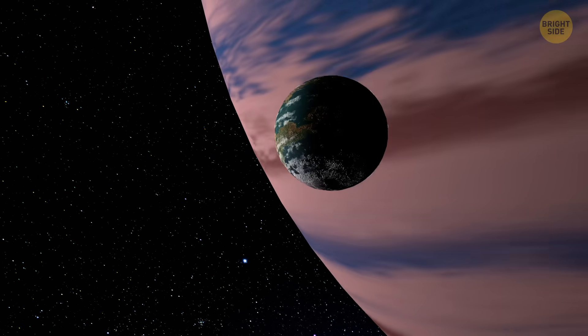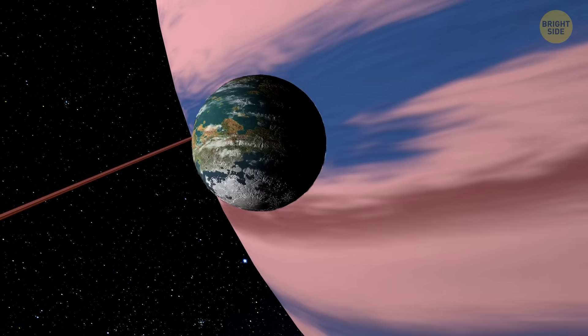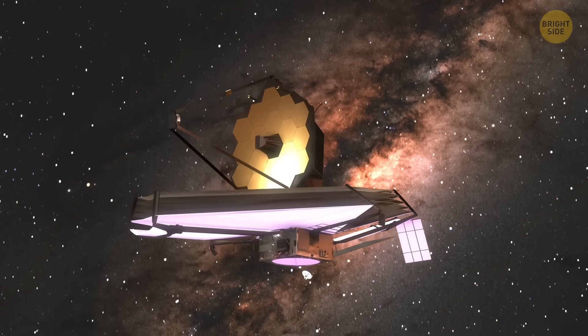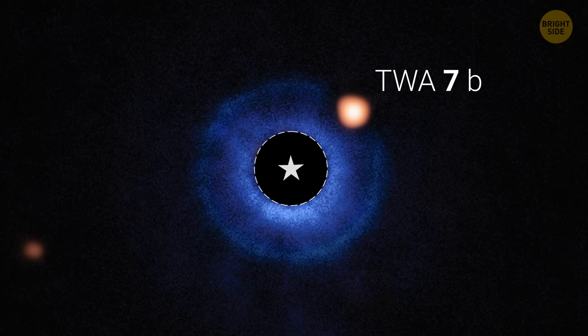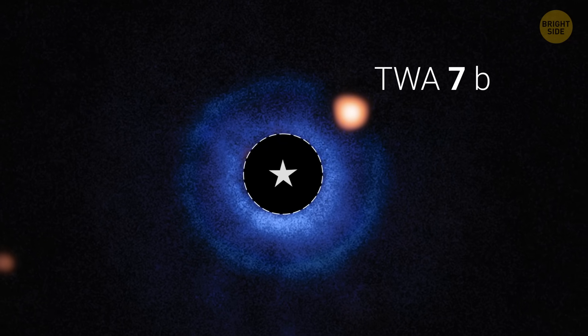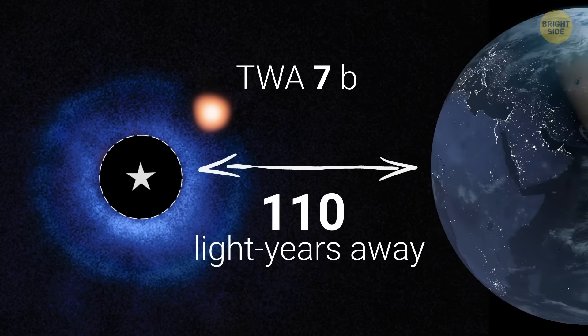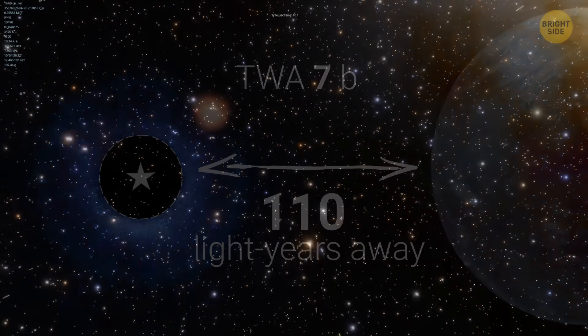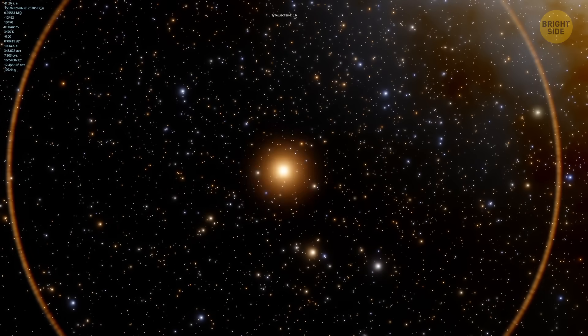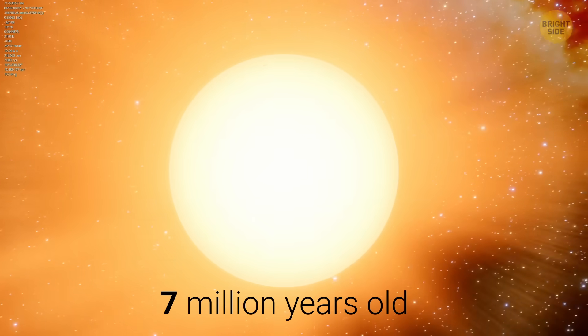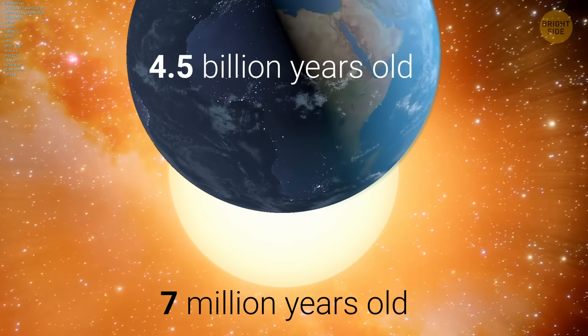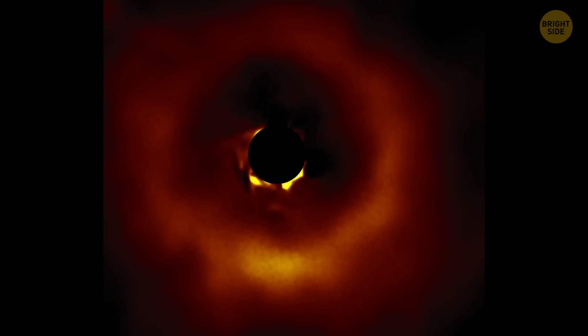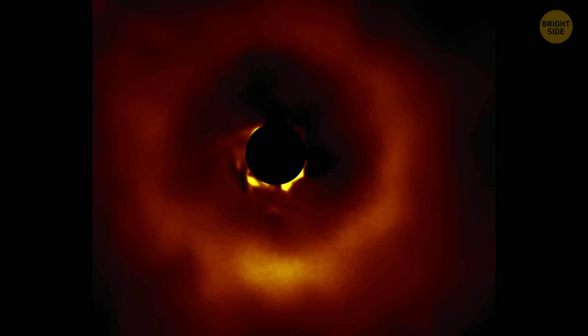S1 isn't the only new planet blowing the minds of scientists. In June 2025, the James Webb Telescope spotted TWA-7b. It's a baby giant planet, orbiting a star just 110 light years away. The star it orbits is only 6 million years old. That's nothing in space terms. Earth is 4.5 billion years old. This star still wears a dusty debris disk around it, the leftover construction materials from planet building.